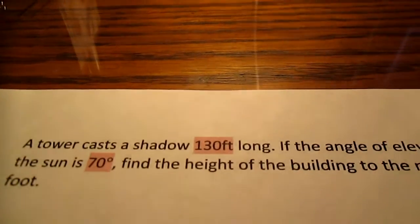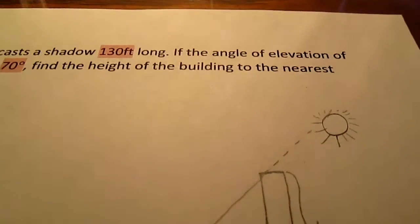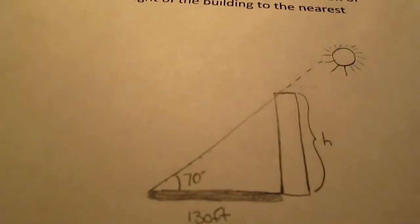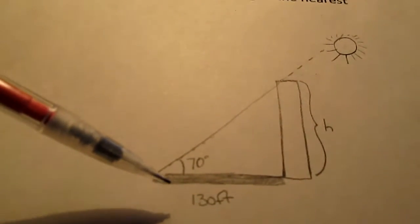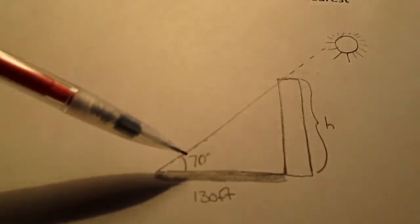Well, the first thing I would do is draw out what it's telling you. There's my sun. This is my building. Casts a shadow 130 feet. That's the elevation to the sun, 70 degrees.